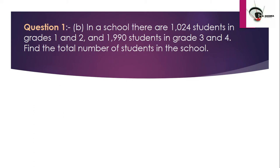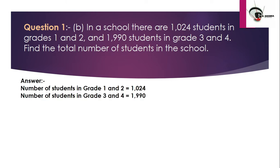The next question: in a school there are 1,024 students in grades 1 and 2, and 1,990 students in grades 3 and 4. Find the total number of students in the school. We note down: number of students in grades 1 and 2 equals 1,024; number of students in grades 3 and 4 equals 1,990.